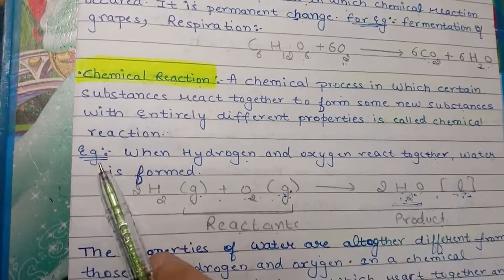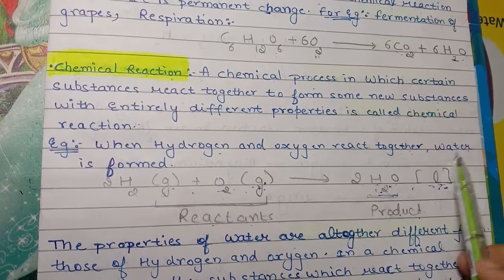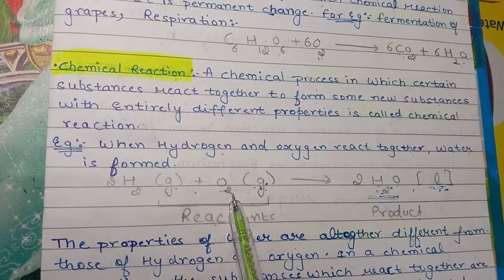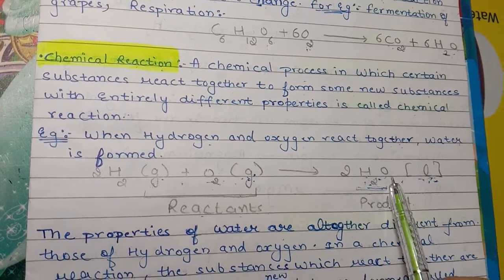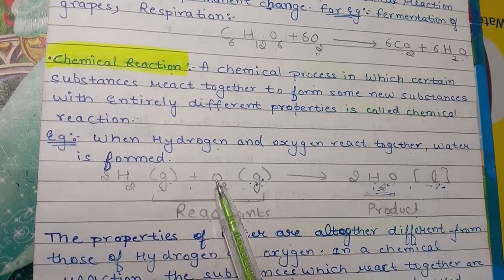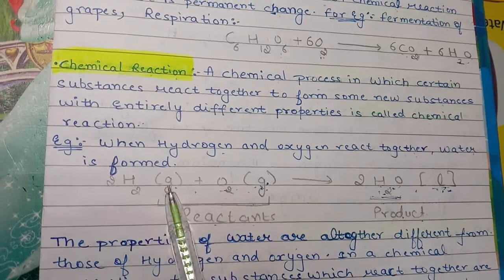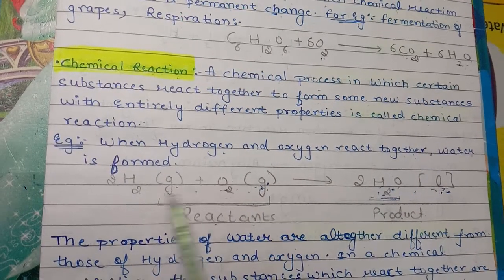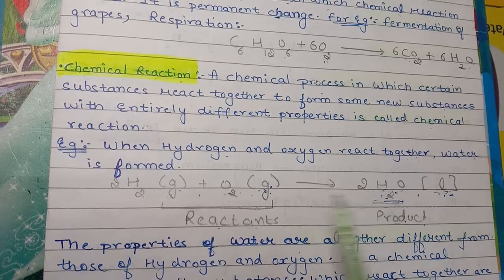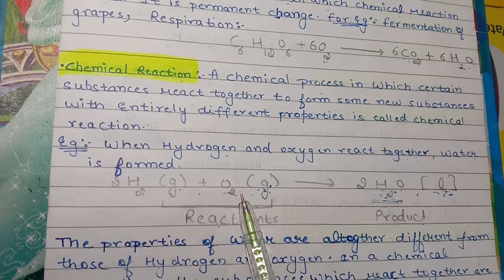Now we will see an example. When hydrogen and oxygen react together, water is formed. H2 stands for hydrogen, O2 stands for oxygen, and H2O stands for water. As we know, hydrogen is a gas and oxygen is also a gas, but water is a liquid. So the reactants were gases but the product is a liquid.